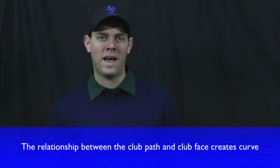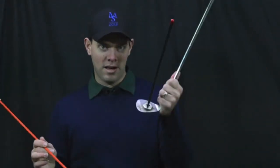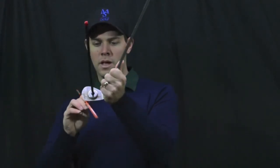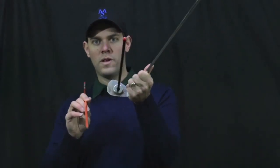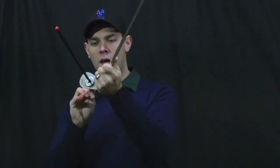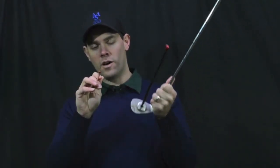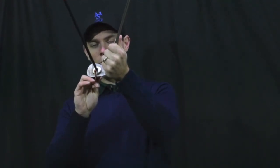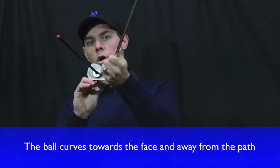What curves the ball is the relationship between the path and the face. I'm going to use this rod here to illustrate the club path, and I've got my lie angle tool here to illustrate the clubface. The ball is going to start generally where the face is pointed — technically it's going to start between the clubface and the path. So let's say I have a club path that is pointed straight to the target, and I have a clubface over here. The ball is going to start somewhere between these two lines, and it's going to curve toward the face, or away from the path.